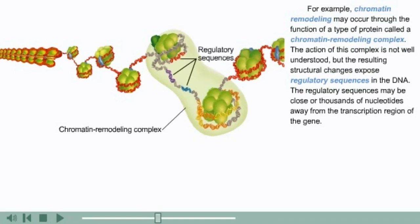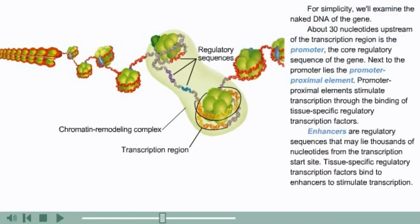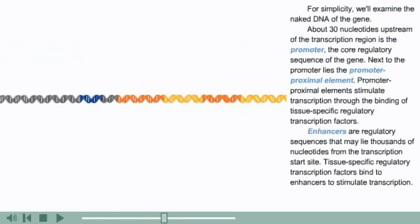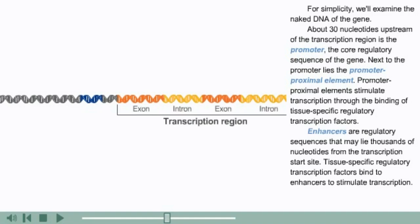The regulatory sequences may be close or thousands of nucleotides away from the transcription region of the gene. For simplicity, we'll examine the naked DNA of the gene. About 30 nucleotides upstream of the transcription region is the promoter, the core regulatory sequence of the gene.